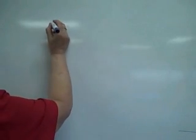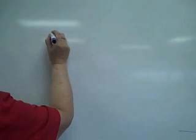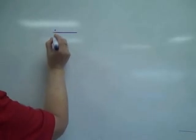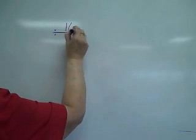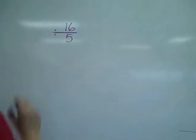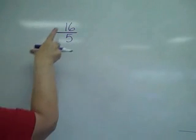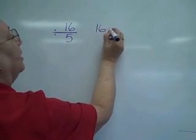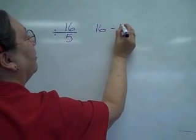A fraction is a division problem. Whatever is on the top is going to be divided. So if I have a fraction like 16 fifths, that tells me it's going to be 16 divided by 5.